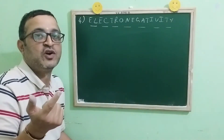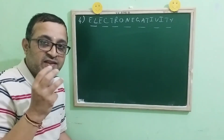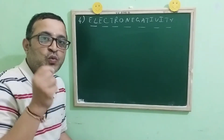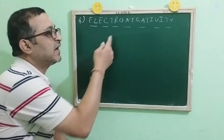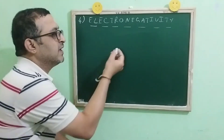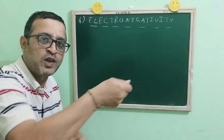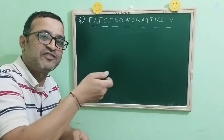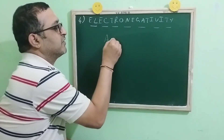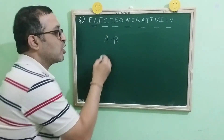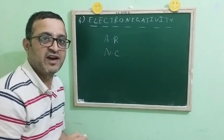In the last video, we discussed the definition of electronegativity and the factors which will affect it. We will do a quick recall. Electronegativity is nothing but the power or capacity of an atom in a molecule to pull the shared pair of electrons towards itself. The factors that affect this are atomic radius and nuclear charge.